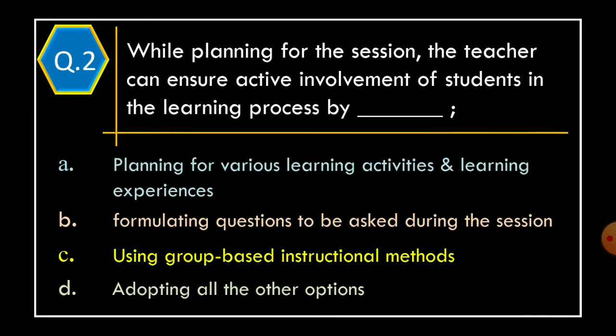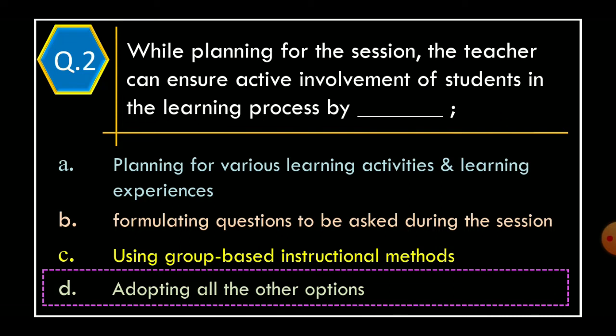Question 2. While planning for the session, the teacher can ensure active involvement of students in the learning process by: Option A. Planning for various learning activities and learning experiences. Option B. Formulating questions to be asked during the session. Option C. Using group-based instruction methods. Option D. Adopting all the other options. The correct option is Option D: Adopting all the other options.